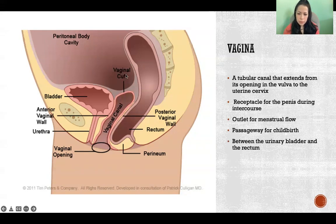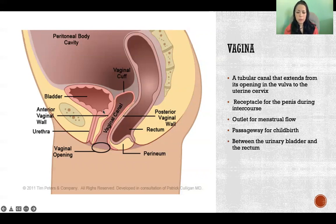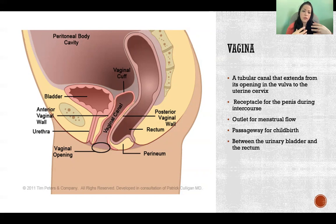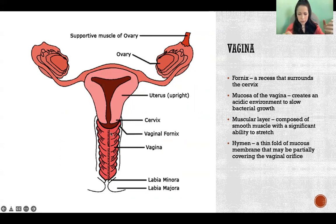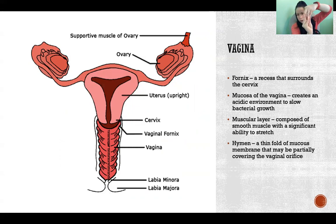The vagina is an internal structure — an internal organ. From the outside you can see the opening, which is part of the vulva, but you don't actually see the vagina itself. The vagina has the fornix — that's the most superior portion, the part that hugs around the cervix. The cervix is the most inferior part of the uterus, and the vaginal fornix comes up and hugs around the outside to form the connection between the uterus and the vagina.